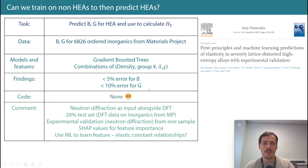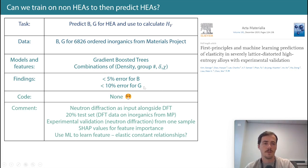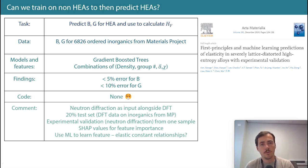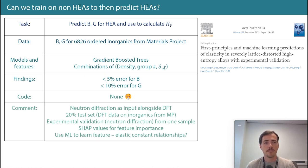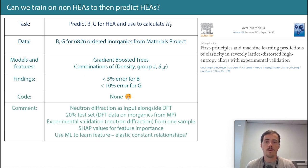They ultimately report less than 5% error on bulk modulus and less than 10% error on shear modulus. First off, there have been many papers already doing bulk and shear modulus predictions — we did one when we discovered two new superhard materials, and we got similar performance training on ordered inorganics from the Materials Project. So this is essentially redoing what's been done before.